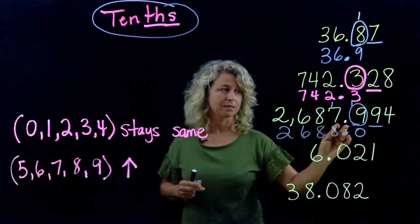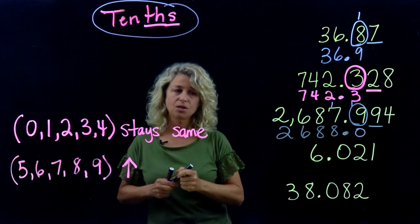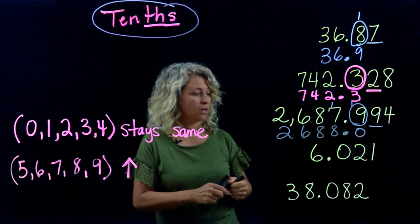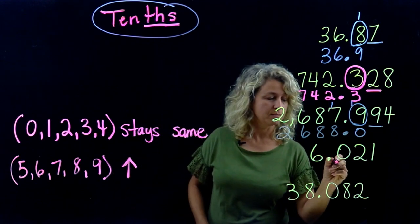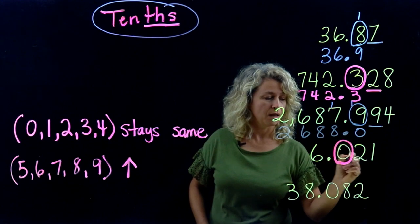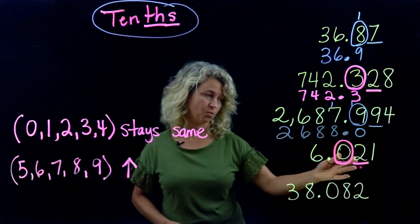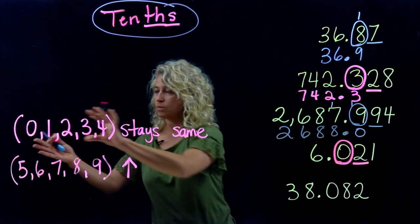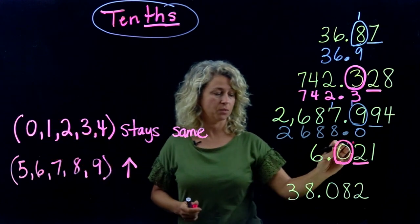Let's continue. Let's do another one: rounding to the tenths place. Underline the number to the right. Two—it's right here, it stays the same. So we know this zero will just stay the same. You're getting the hang of it.